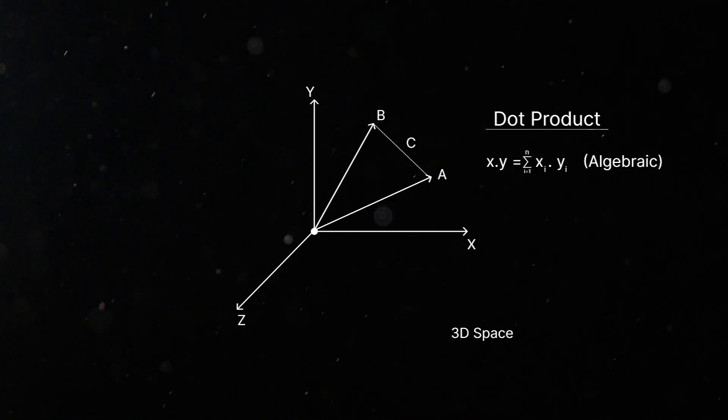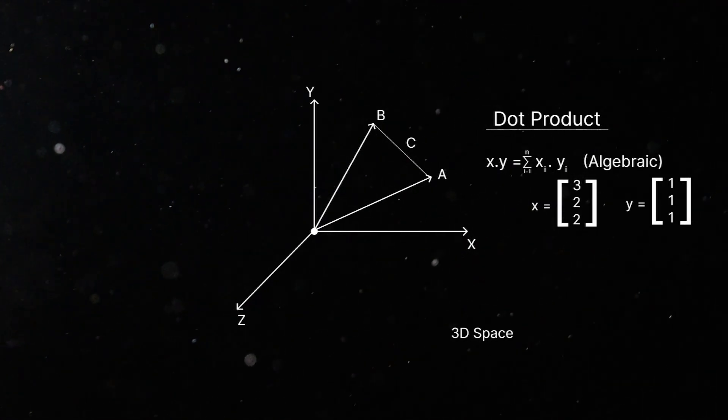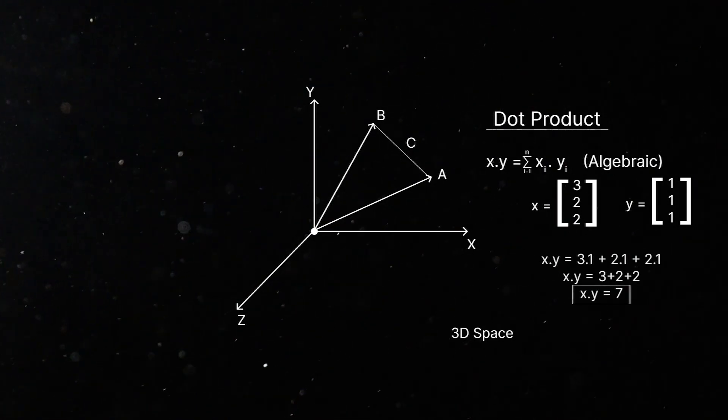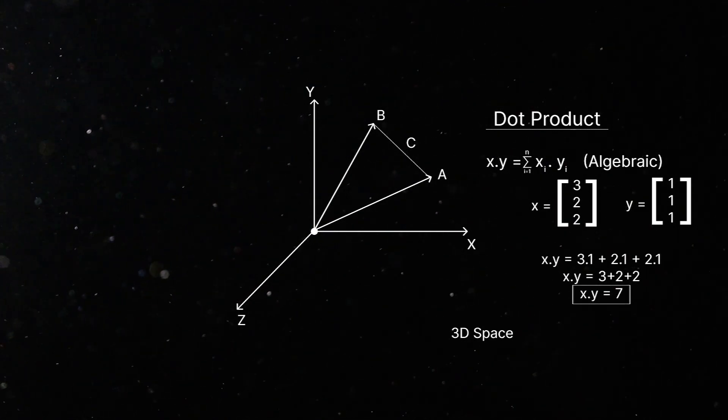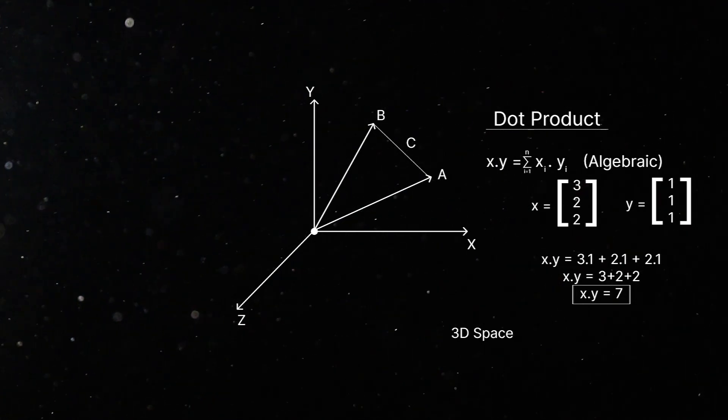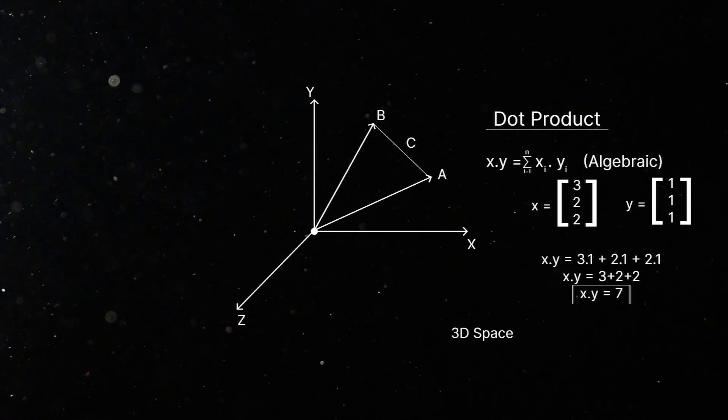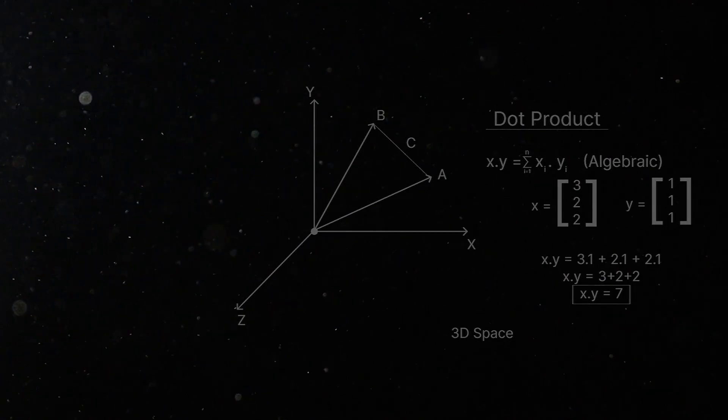Another crucial concept is the dot product which measures how two vectors are arranged relative to each other. The dot product can be defined algebraically as the sum of products of corresponding components of the two vectors. We can also define it geometrically as the product of the magnitudes of two vectors and the cosine of the angle between them. These two definitions are equivalent and can be used to perform various operations as you'll see in the upcoming videos.